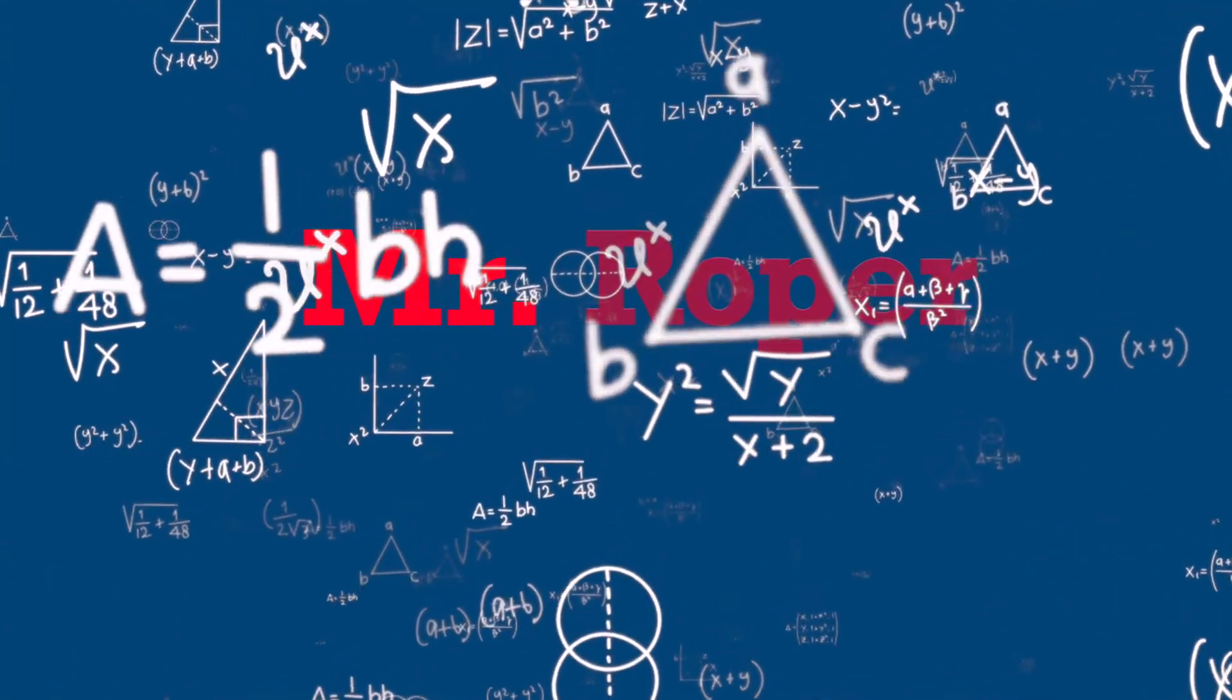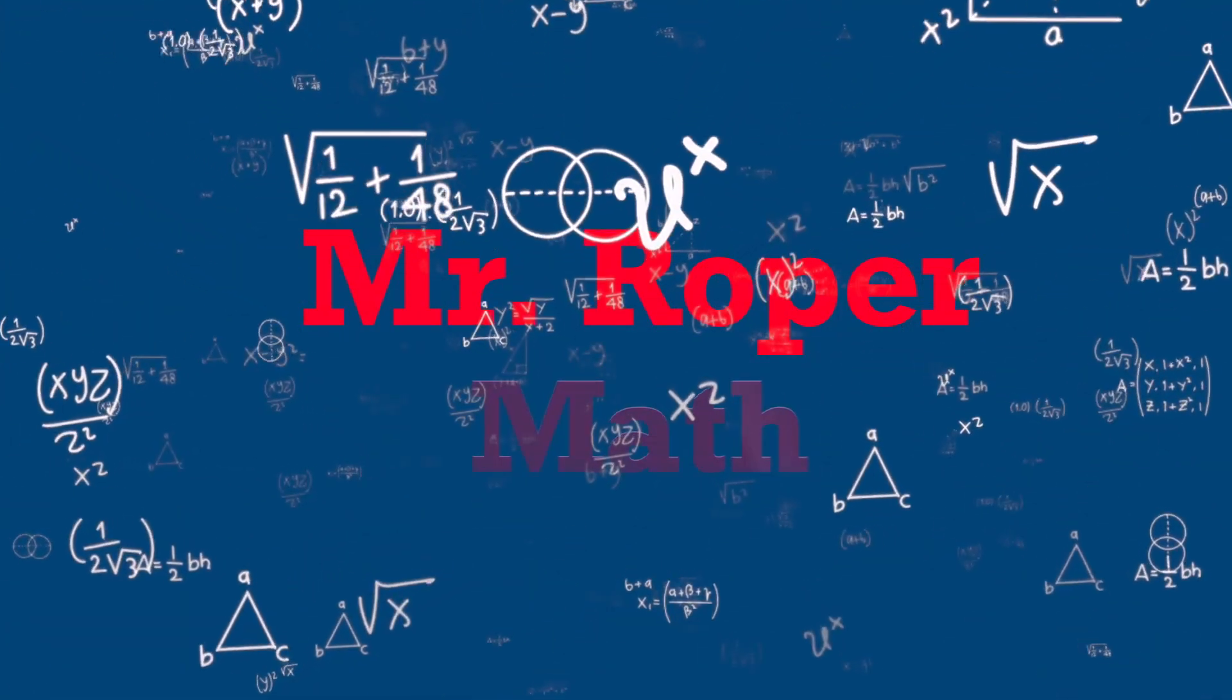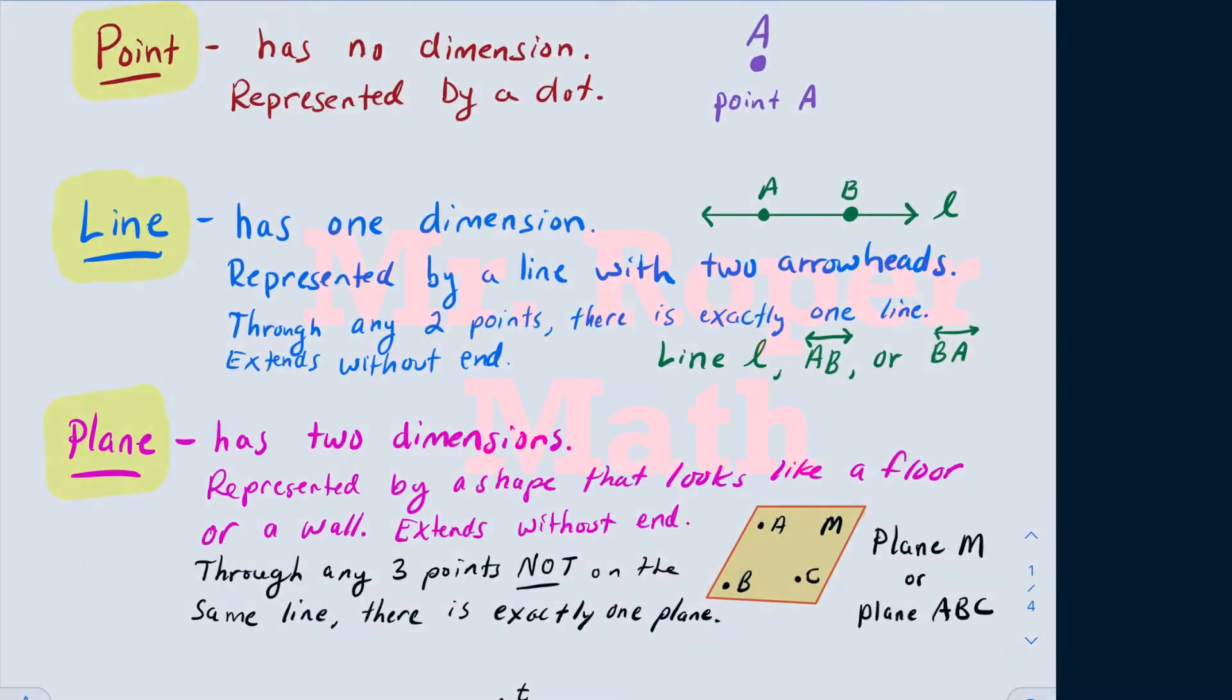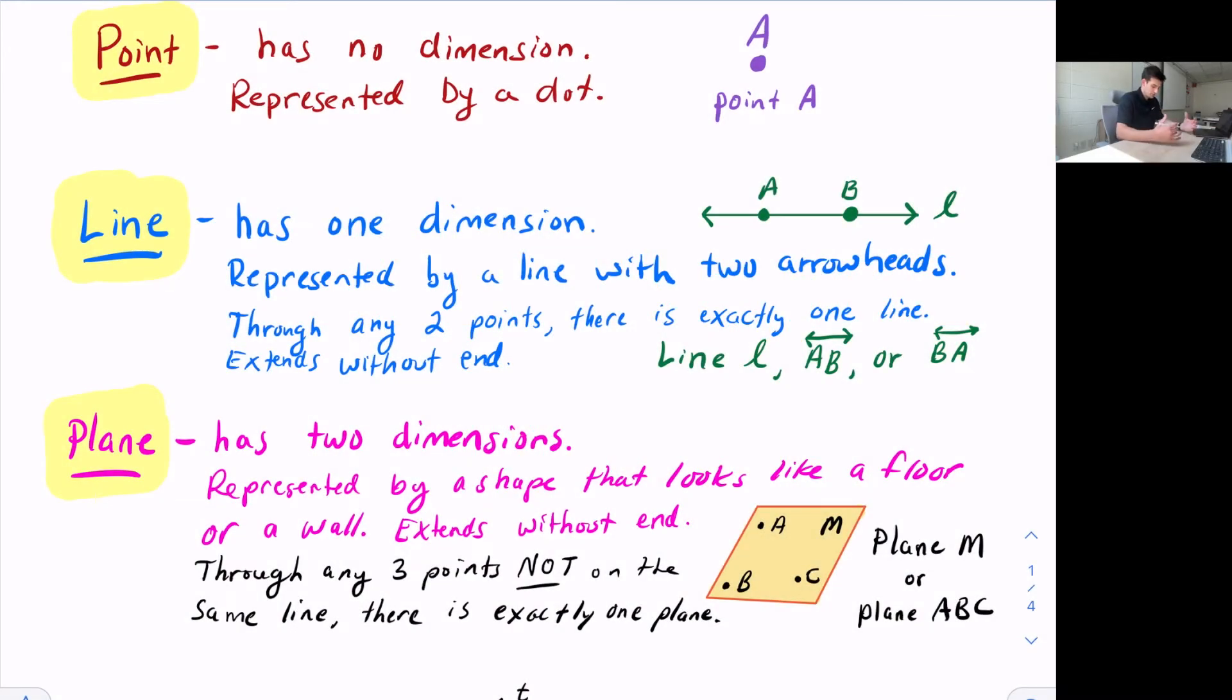In this video, we're going to learn about points, lines, and planes. The first thing we're going to look at is a point. A point has no dimension, and it's just represented by a dot. So we see an example there, Point A, with a capital A for the point.